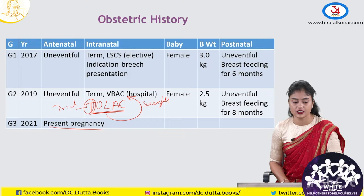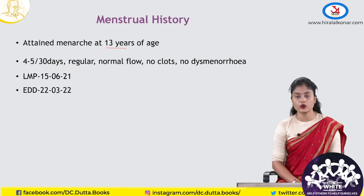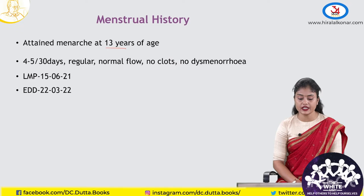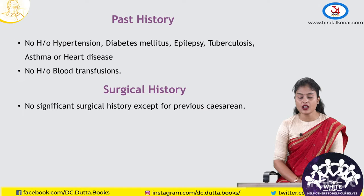Her menstrual history: she attained menarche at 13 years, 4 to 5 days cycle for every 30 days, regular, normal flow, no clots and no dysmenorrhea. Her last menstrual period was on 15th June 2021 and by Naegele's formula, her expected date of delivery will be on 22nd March 2022. Past history: she was not a known case of hypertension, diabetes, epilepsy, tuberculosis, asthma, heart disease, or thyroid abnormalities. No history of blood transfusion in the past.